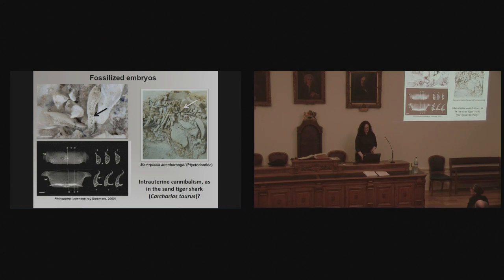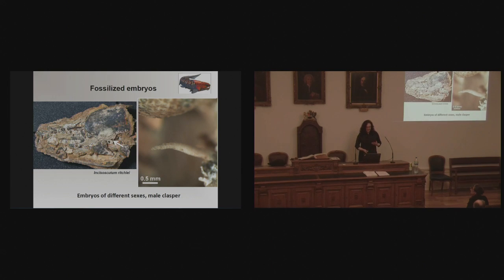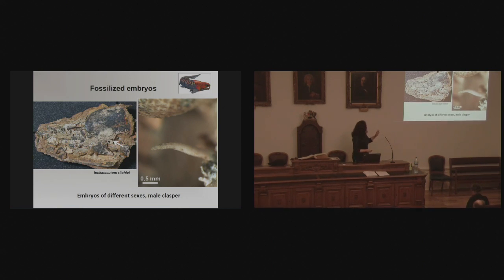We also have some evidence going back to that specimen — in that very small embryo under the trunk plate, we think we have evidence for an embryonic clasper. So we think we have evidence for a male in this specimen and perhaps sexual differentiation very early in embryos in placoderms.